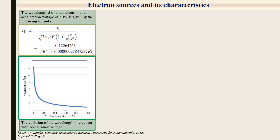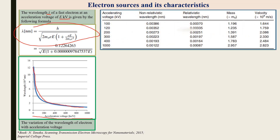In transmission electron microscopy, the wavelength lambda of a fast electron at an accelerating voltage of E kilovolts is given by a specific formula. When the accelerating voltage is increased, the wavelength decreases. For example, with different accelerating voltages from 100 to 1000 kV, there is a corresponding difference in the wavelength of the electron waves.